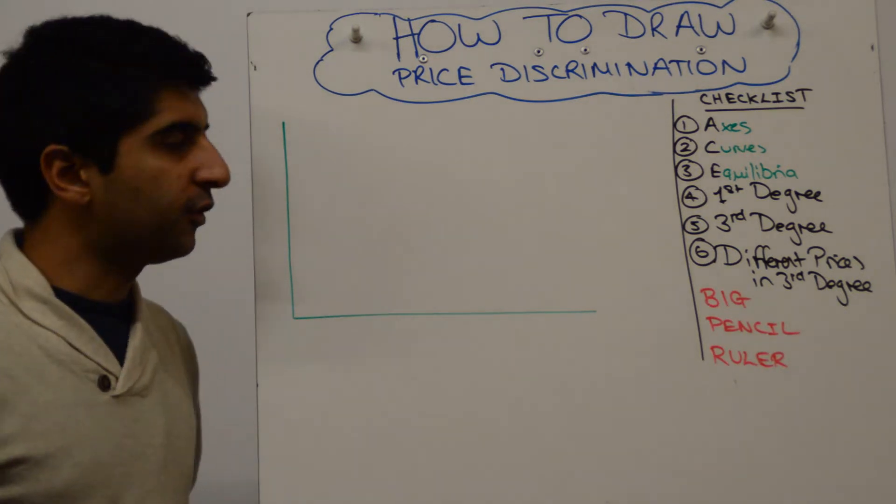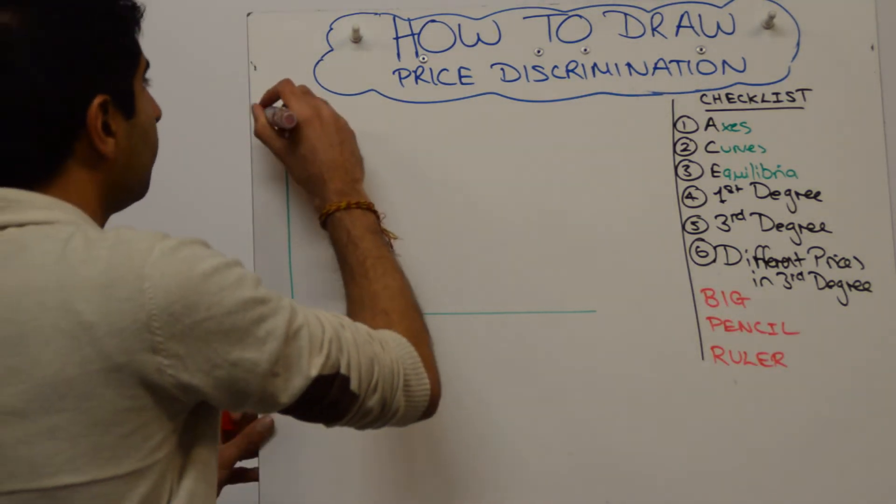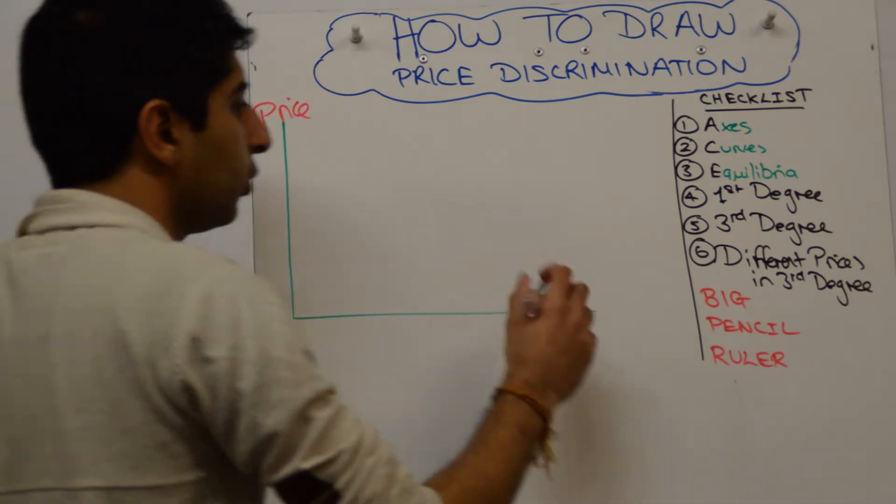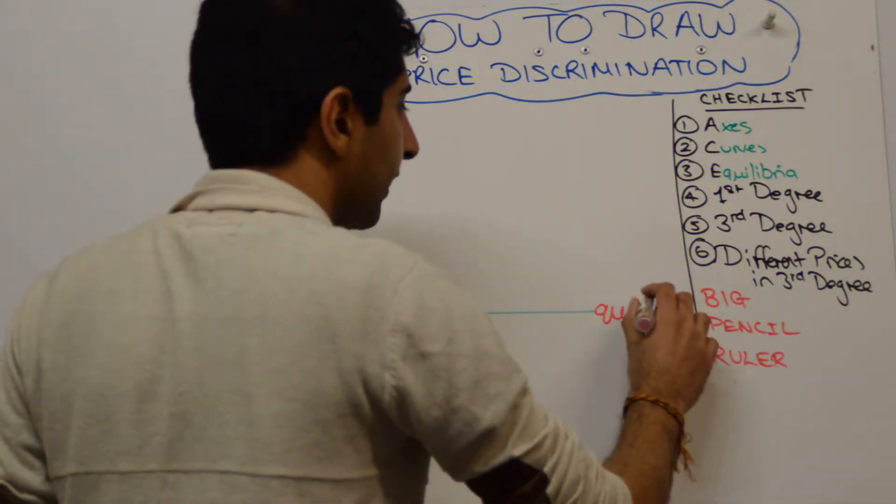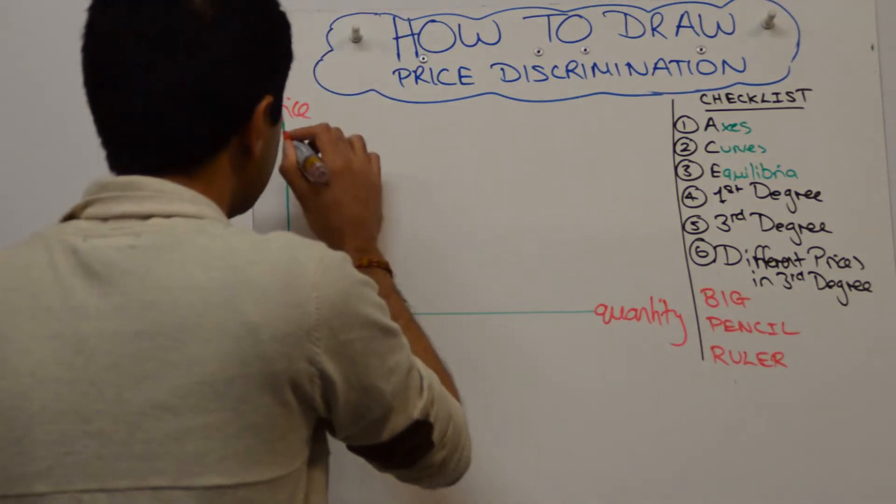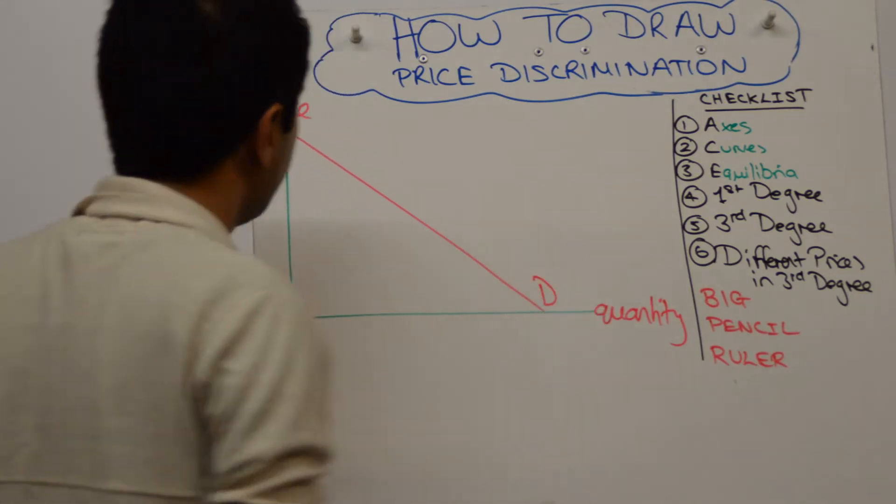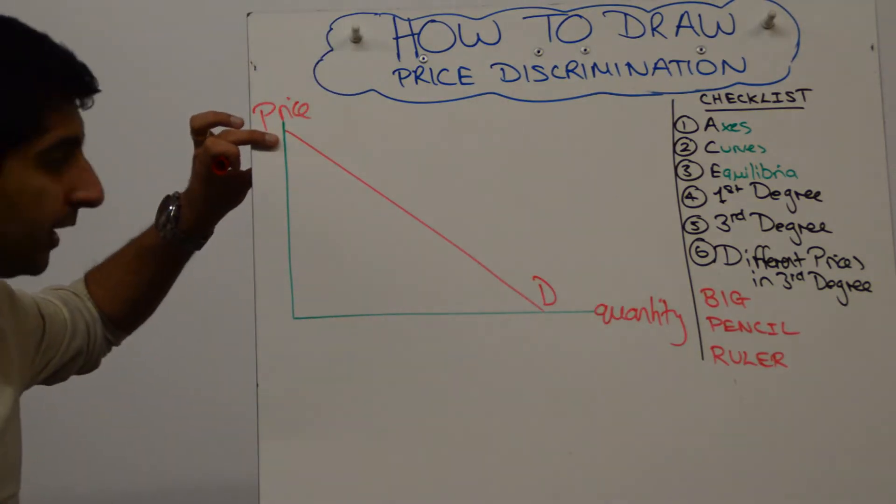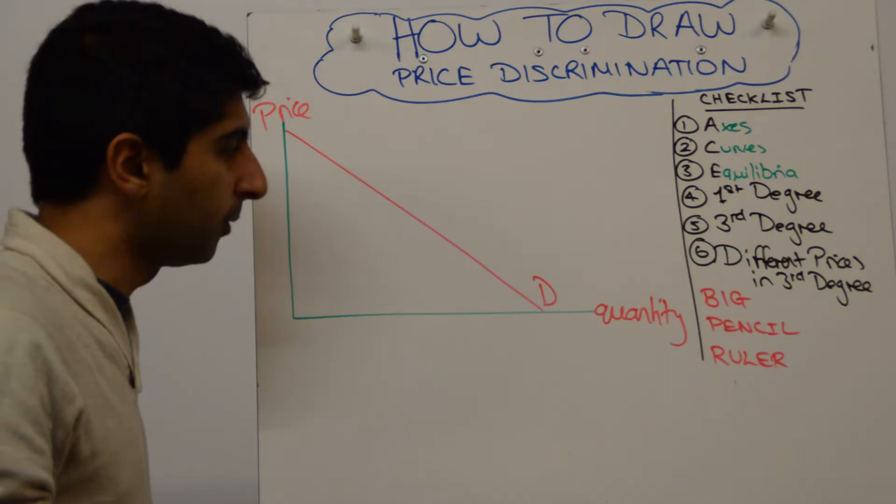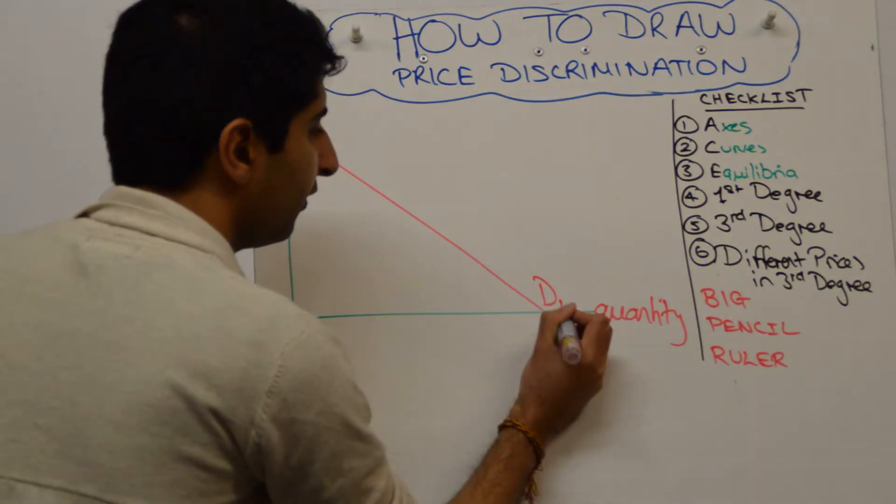This diagram is for first degree. What do you draw? Well, just simply price and quantity on the axis like this, draw a demand curve, make sure your demand curve starts from the y-axis. That's going to be important because we're going to show a consumer surplus. So demand curve, call it D1.